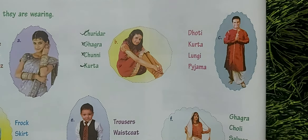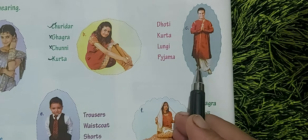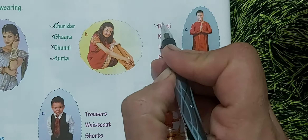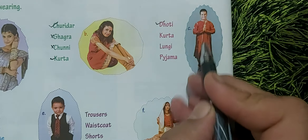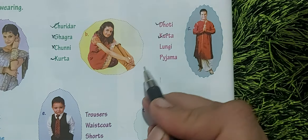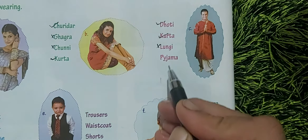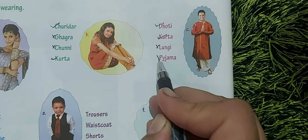This person is wearing dhoti — yes, this is dhoti. Kurta — yes, this is kurta. Lungi — no lungi — cross. Pajama — no pajama — cross.